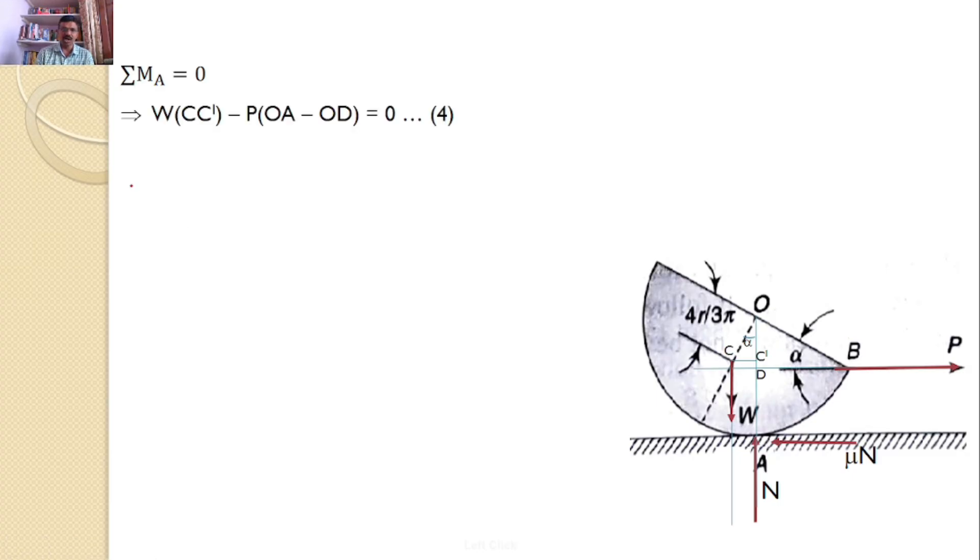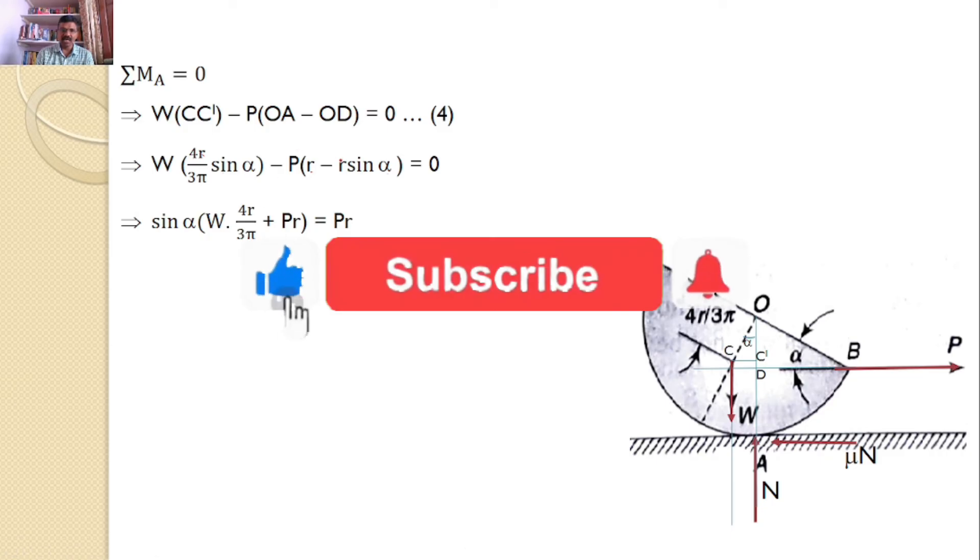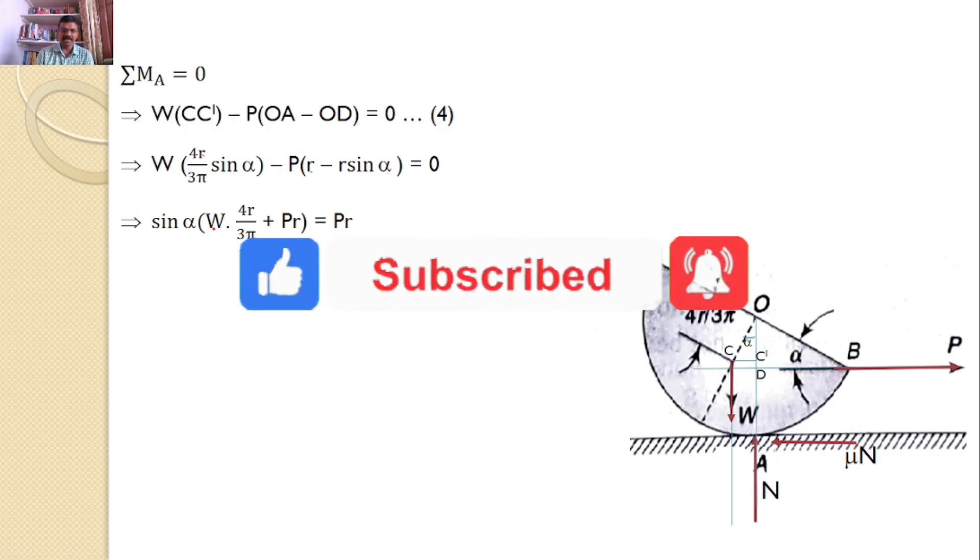So I can substitute now. W × (4R)/(3π) sin α - P × (r - r sin α). So I can simplify further. I can take sin α outside. sin α × (W × (4R)/(3π) + P × r) = P × r.